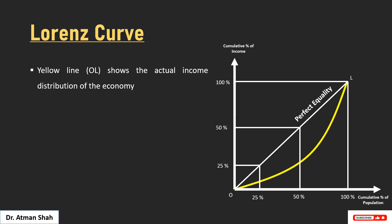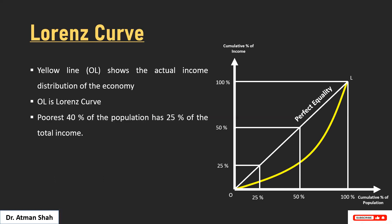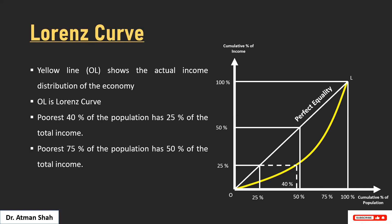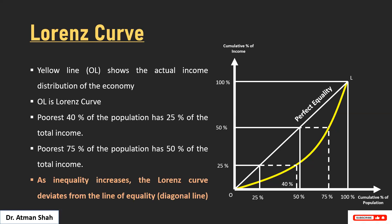Now suppose this yellow curve shows the actual income distribution of the economy — this is our Lorenz curve. In this case, the poorest 40% of the population has 25% of the total income, or the poorest 75% of the population has 50% of the total income. As inequality increases, the Lorenz curve deviates from the line of equality.